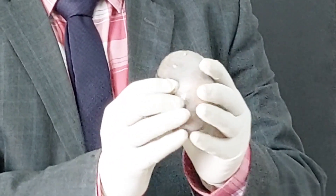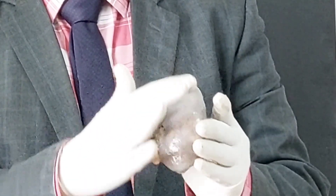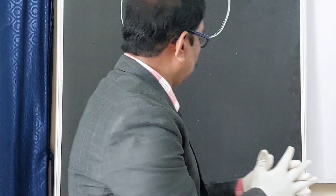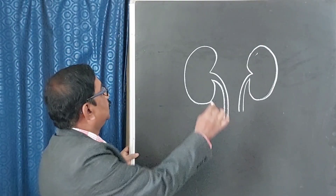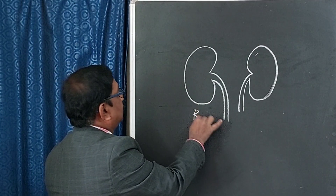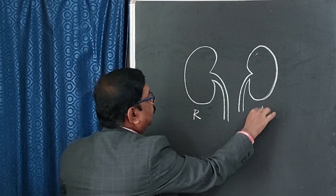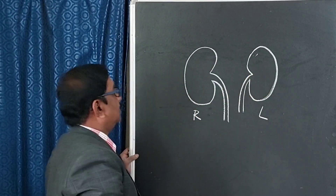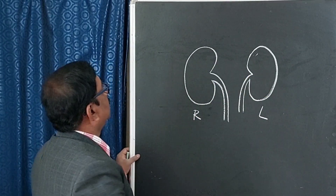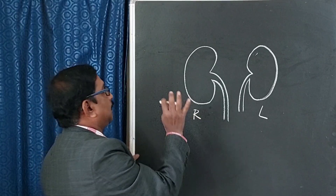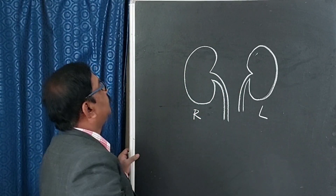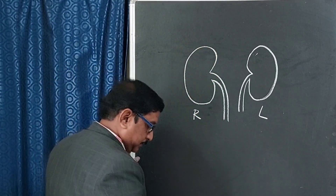I will show you today the relations on the anterior surface and relations on the posterior surface. Let us look at the board. Suppose this is the right kidney and this is the left kidney. This is the anterior surface of the right kidney and the anterior surface of the left kidney. Let us see one by one what are the important viscera lying in front of the right kidney and left kidney.